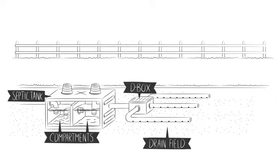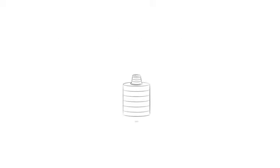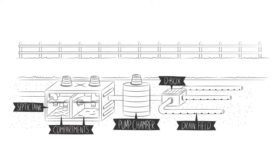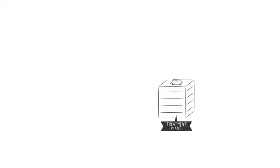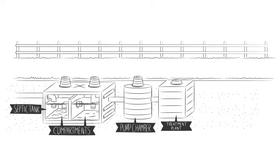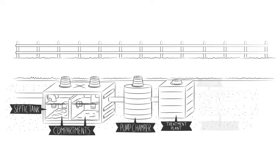Many Type I systems also have a pump chamber. And more advanced Type II and III systems may have a package treatment system. This type allows for a shorter drain field and is used on small sites.